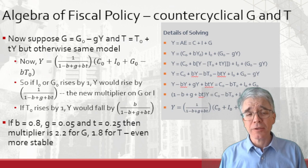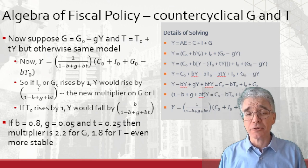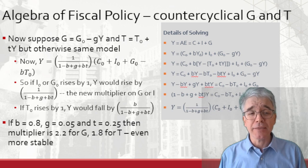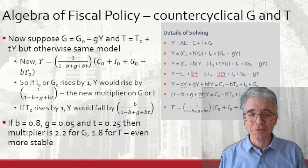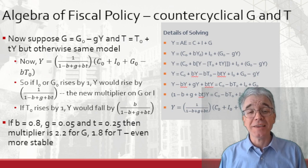Now add in both counter-cyclical G and counter-cyclical T. The idea is when people make more money, they pay more tax, which you all know if you've gotten a raise at work and noticed that your take-home pay doesn't change as much as you hoped. We formalize that in the equation, T equals T naught plus little t Y.